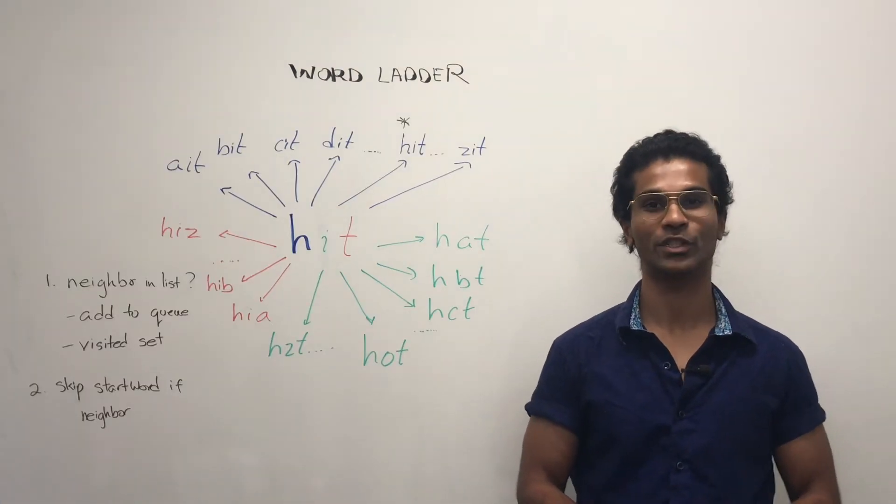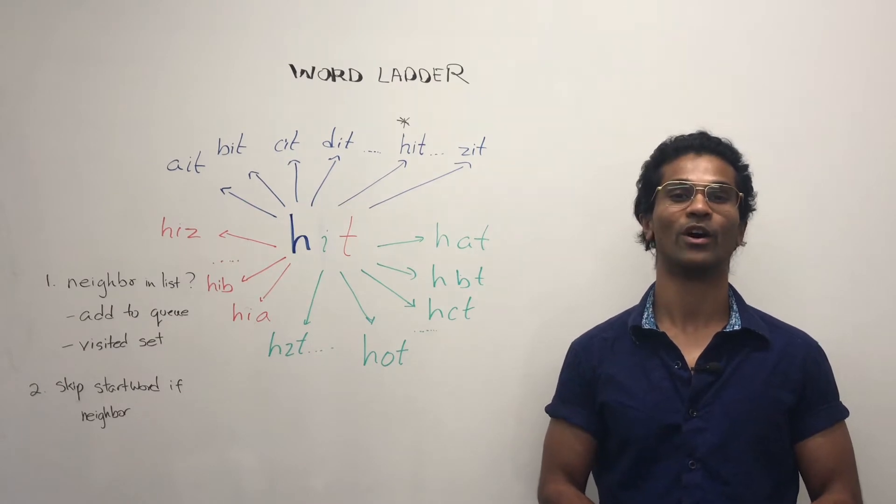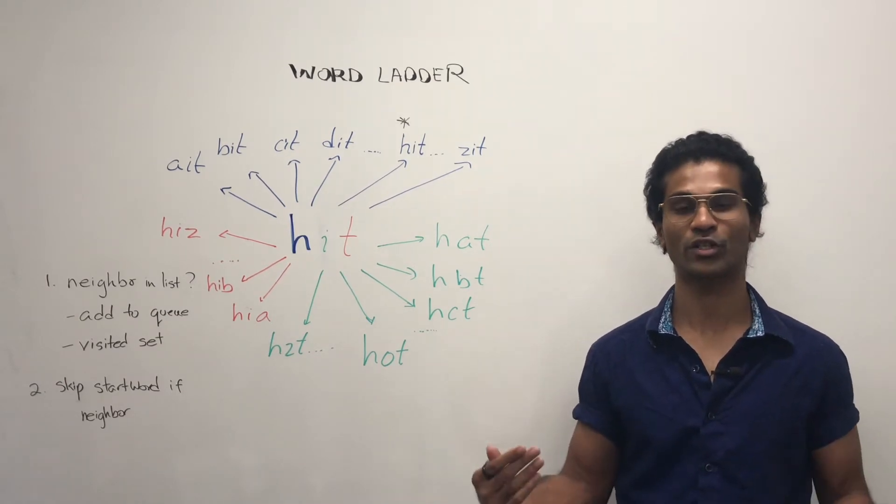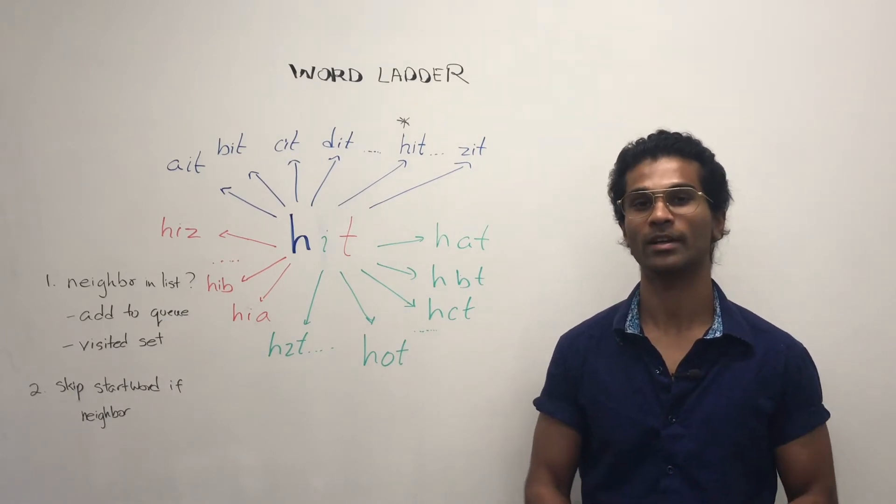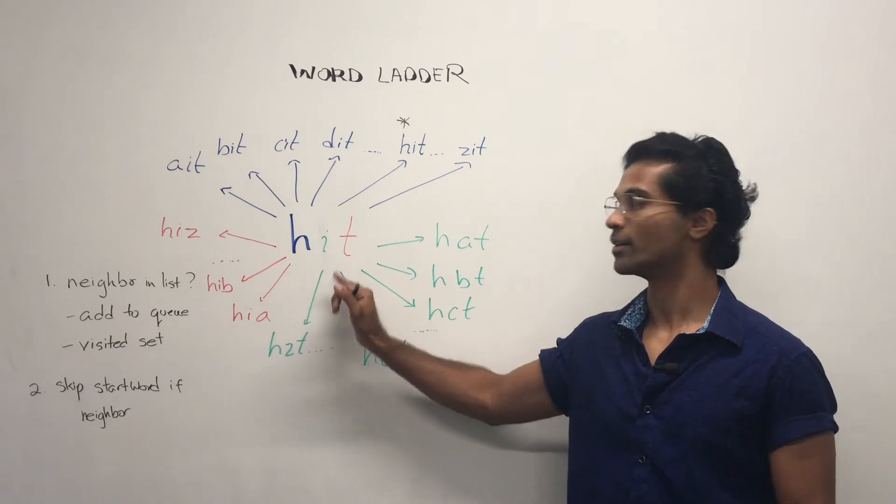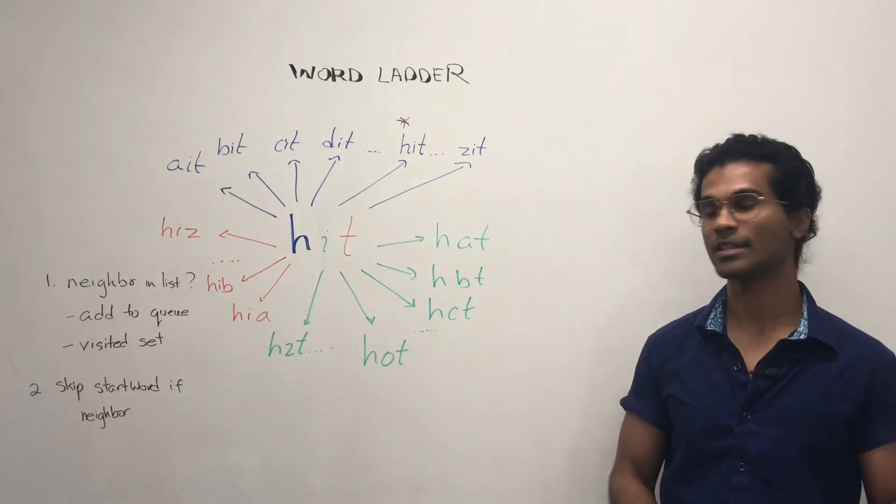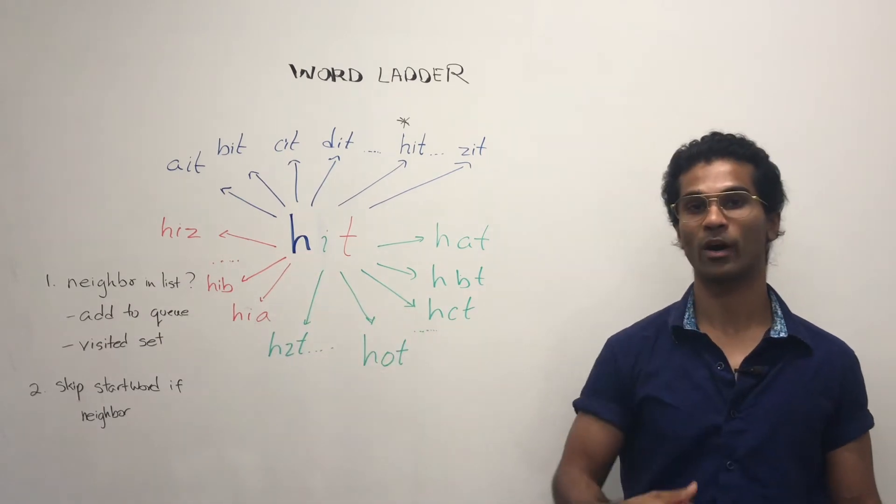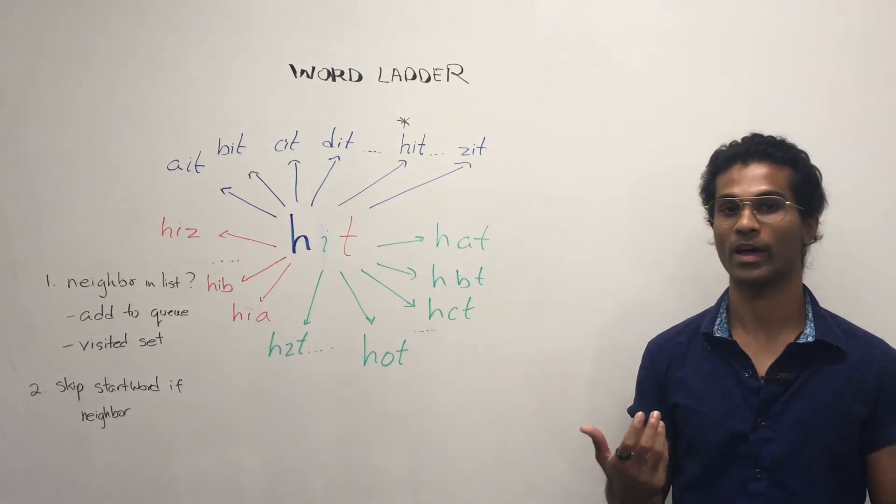So how are neighbors actually generated? We know that a word and its neighbor are nodes and the relationship between them is an edge. The way we generate neighbors is by going letter by letter in the given word. Let's say HIT is our word. So first is going to be H and we swap it out for alphabets that we have.